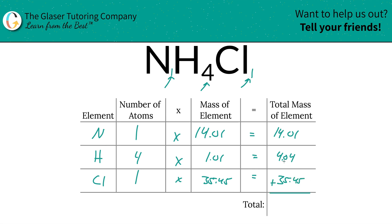And then the total mass of the entire compound, just simply add this column on up. So it's going to be 53, 53.50.